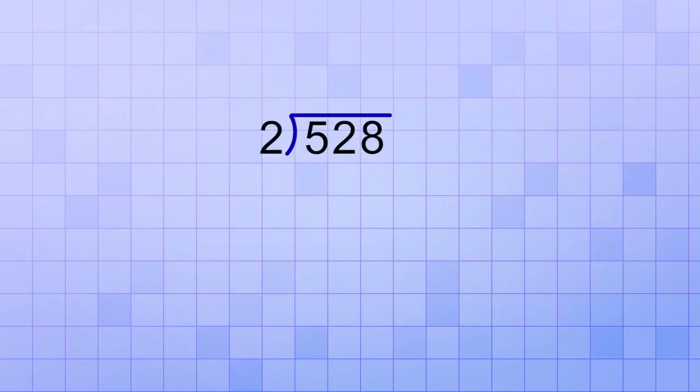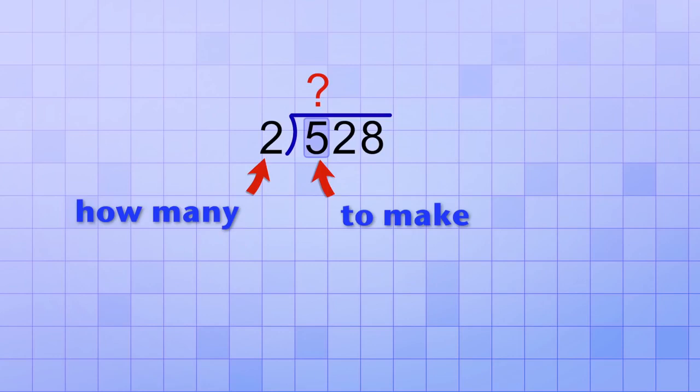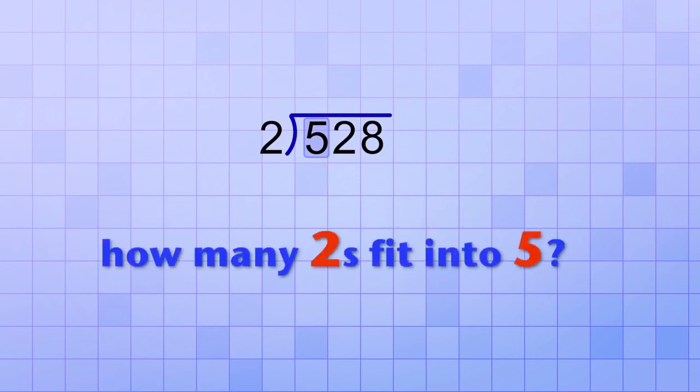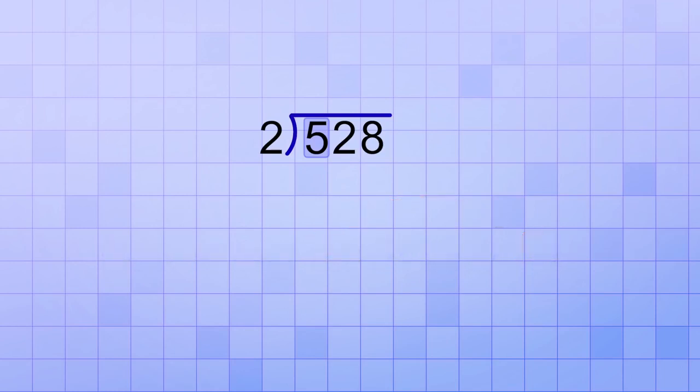To solve this first problem, we start by asking, how many 2's does it take to make 5 or almost 5? And it's easy to see that the answer is 2. So we put a 2 as the first digit of our answer, then we multiply 2 times 2, which is 4, and we subtract that 4 from the 5, which leaves us a remainder of 1.